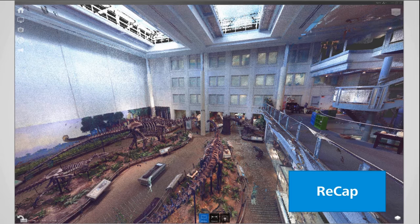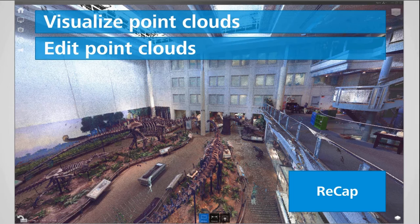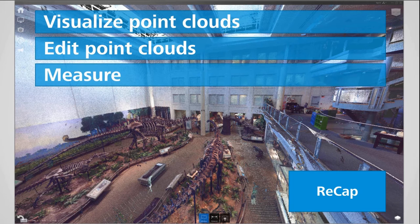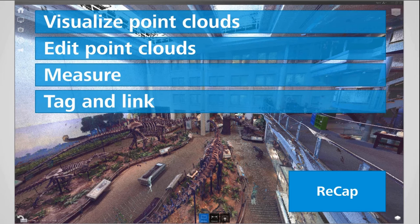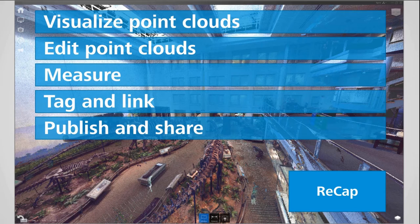An important note: ReCap is dealing with point clouds — a bunch of measurements, as opposed to meshes, which is another form of geometry-based representation. With point clouds, ReCap can visualize, so you can look at the data. You can edit: crop, remove, delete, highlight. You can measure — take measurements from any number of locations, point to point. You can tag and link, create notes in the data, mark up artifacts for objects you want somebody else to take note of. You can also provide embedded information, such as associated Wikipedia articles bound together with the data. And finally, you can publish and share — push this data to the web and provide links to all your project collaborators.